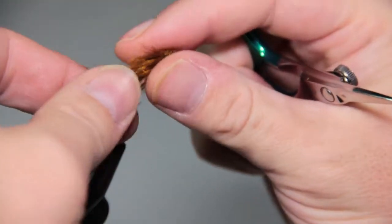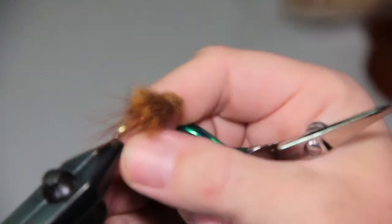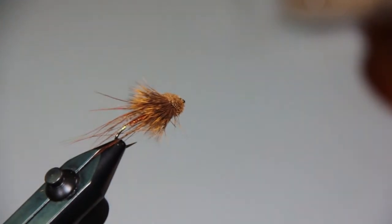And there's a finished euphoric muddler, let me put that back in the vise for you guys so you can take a look at it. There you go, fairly simple fly tying, very effective.